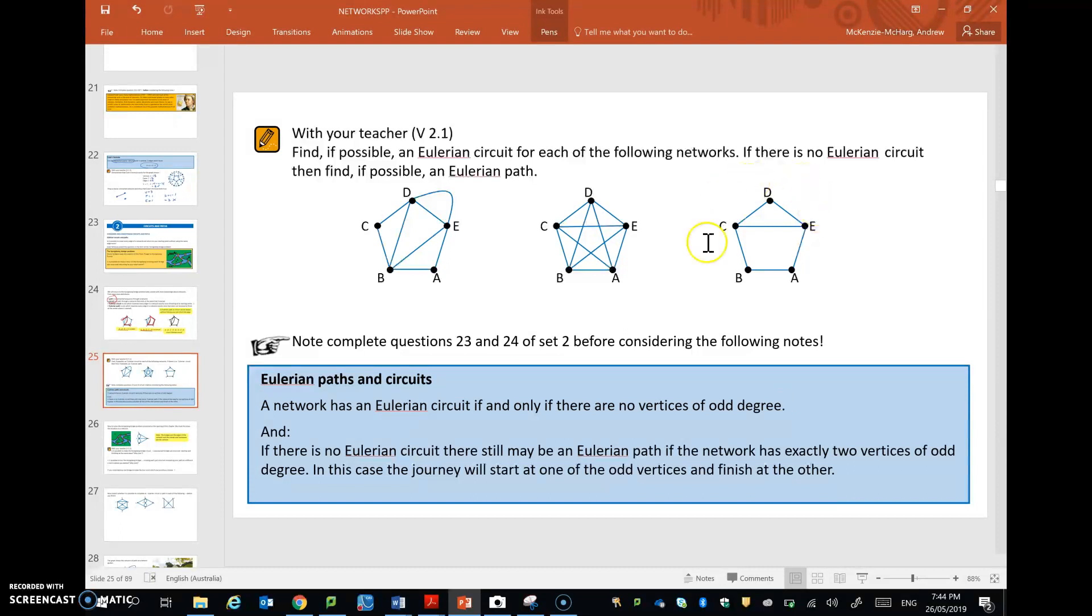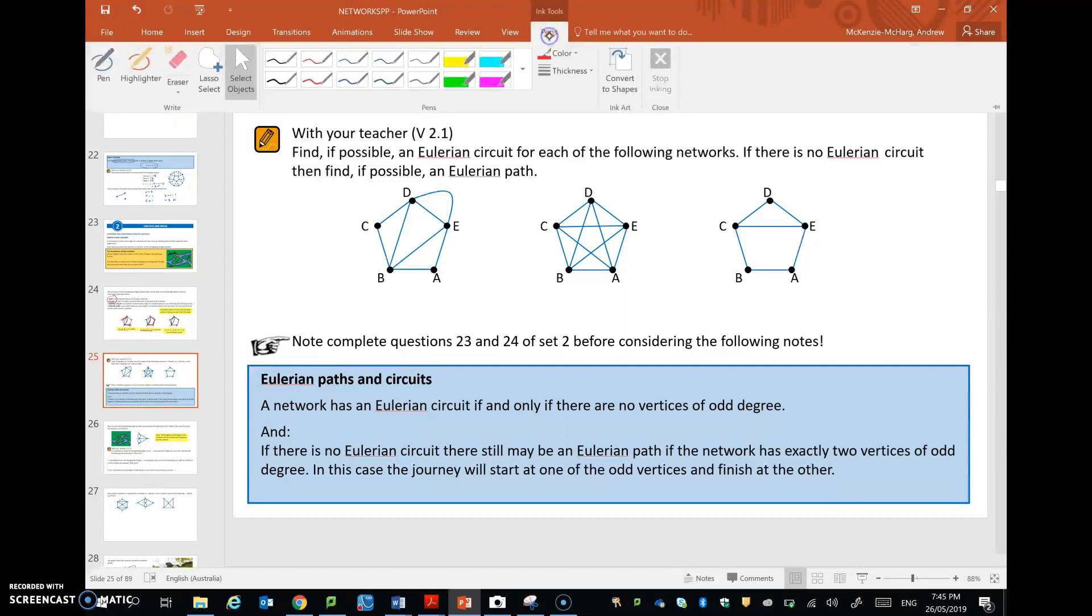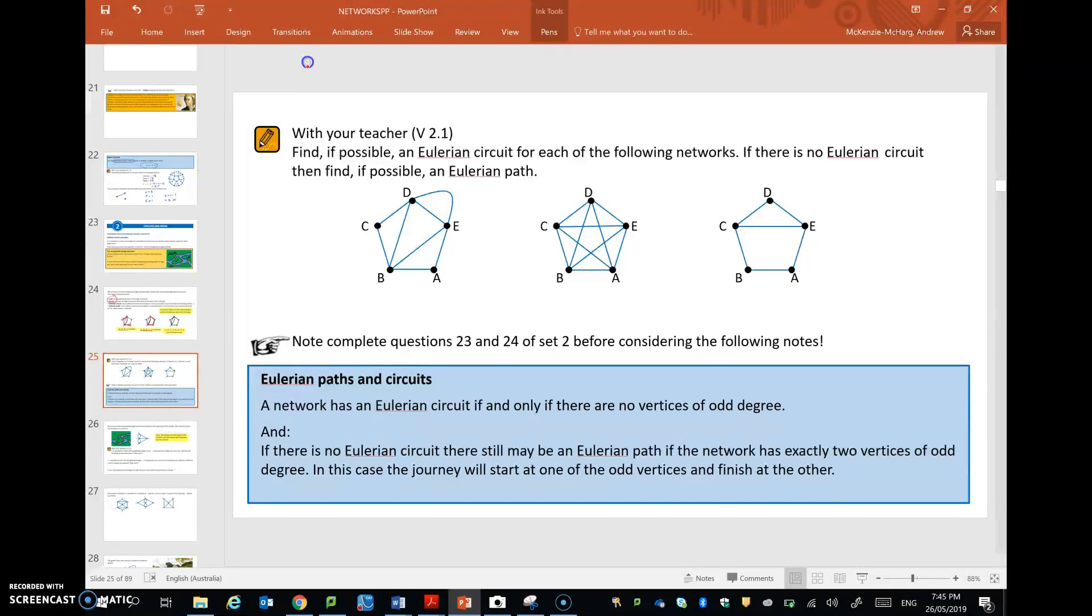So what does that mean? Well, remember this example here, an Eulerian circuit wasn't possible. The degree of a vertex is the number of edges that lead to it or from it. So looking at vertex A, the degree of that one is 2, because there are two edges leading to it. Same for B and D.